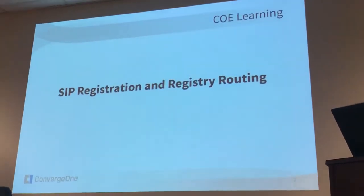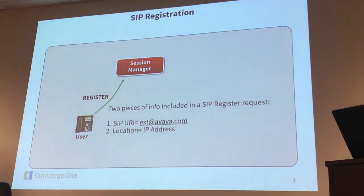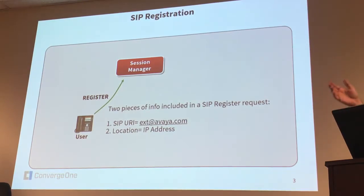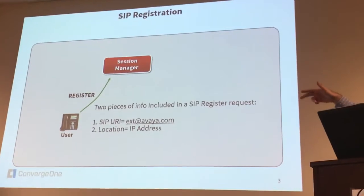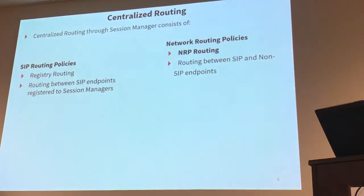We're going to be registering two SIP phones to the Session Manager in your lab. When you register a SIP phone, Session Manager stores two pieces of information: the CPRI, which is normally the extension and domain of the user, and the location, which is the IP address of the phone. Because of those two pieces of information, when you dial a phone registered to Session Manager, you don't need to configure any routing — Session Manager simply proxies the request to that IP address.